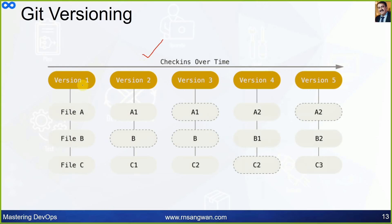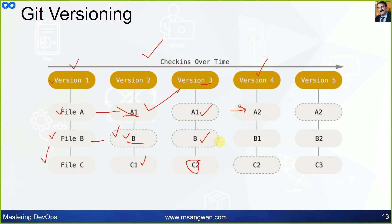Git versioning shows check-ins over time. In Version 1, you have original files A, B, and C. In Version 2, A becomes A1 and C becomes C1, while B is unchanged. In Version 3, C changes to C2. In Version 4, A1 becomes A2, B becomes B1, and C2 remains. In Version 5, B1 becomes B2 and C2 becomes C3. This is how different versions keep coming up.